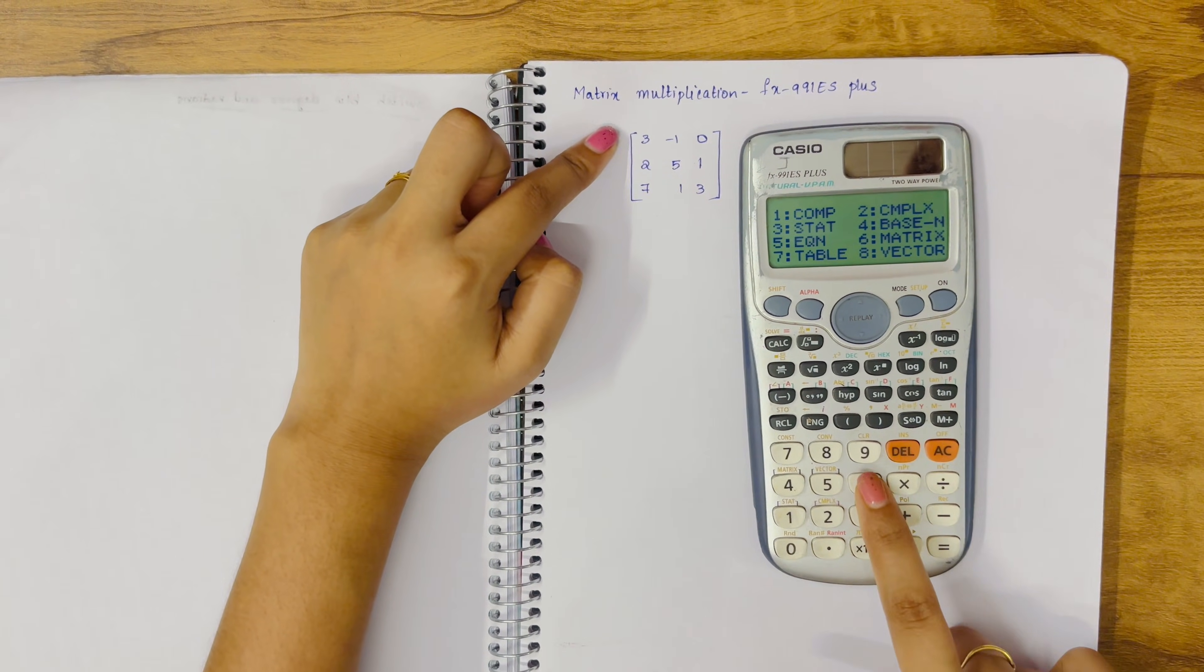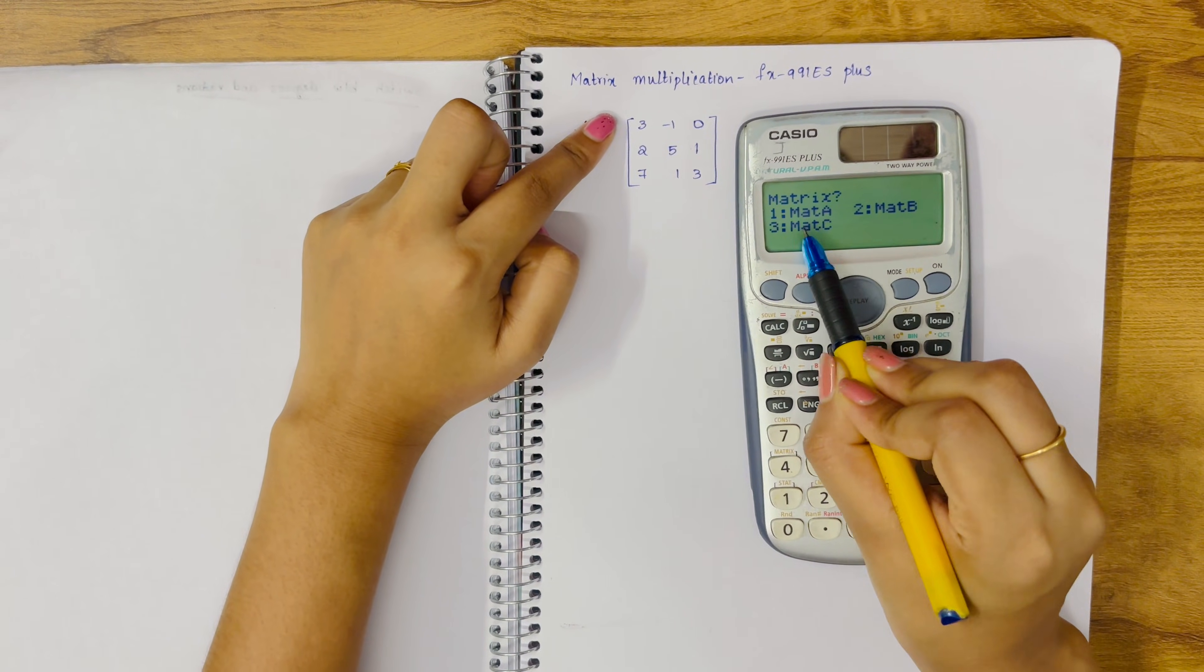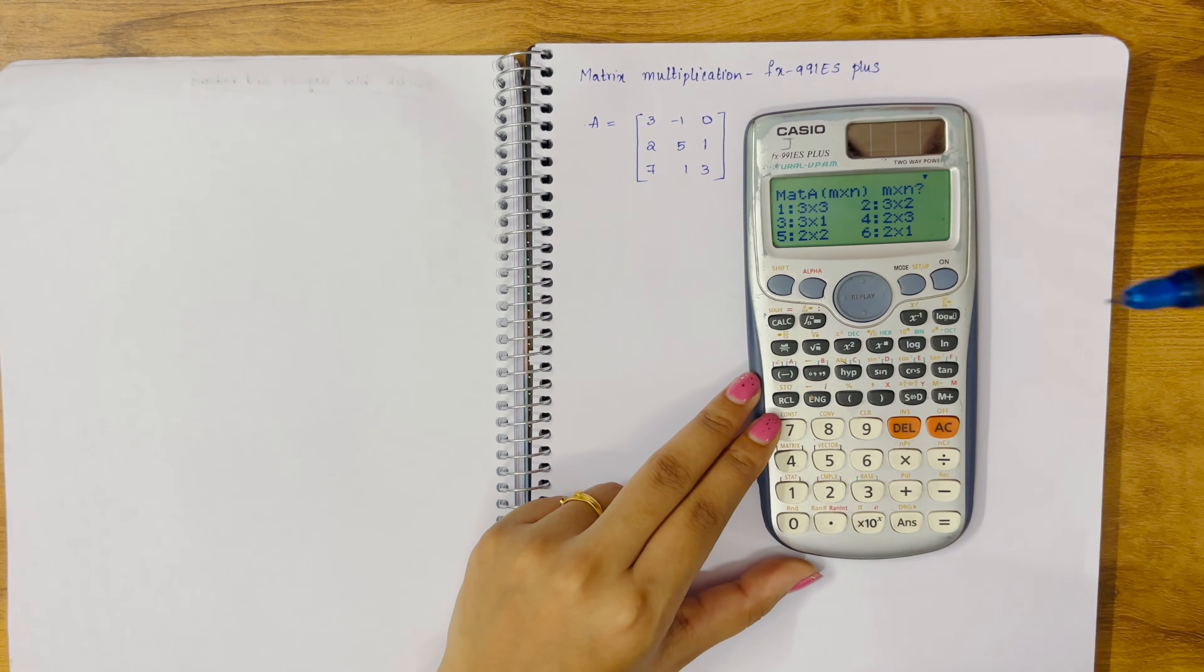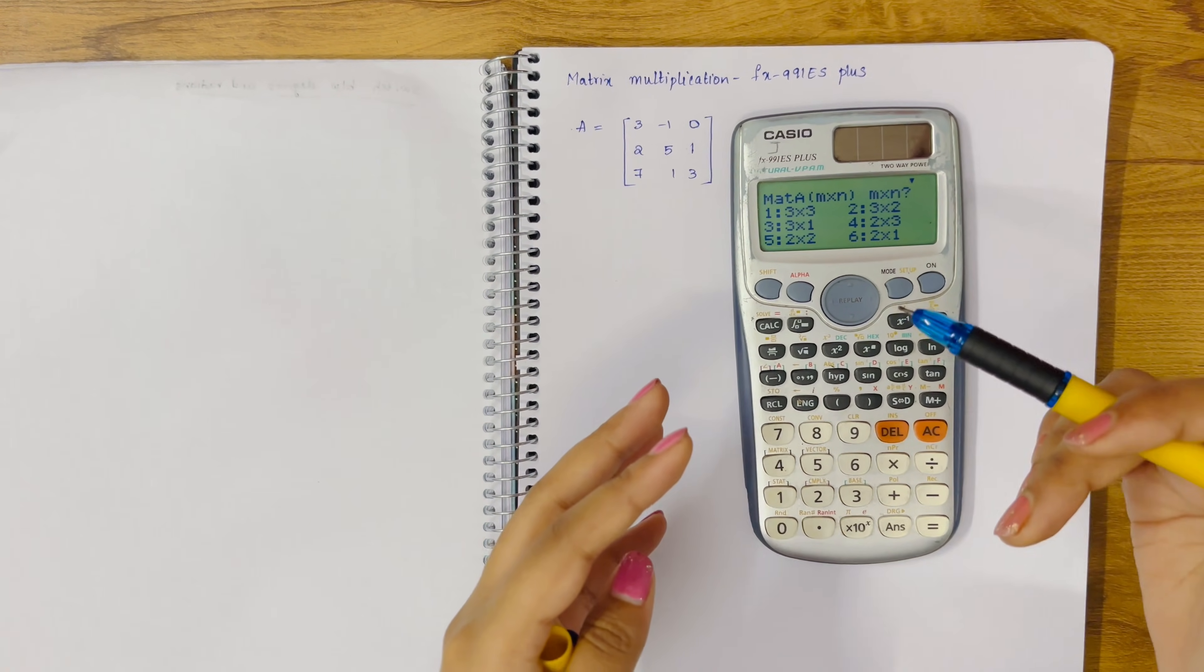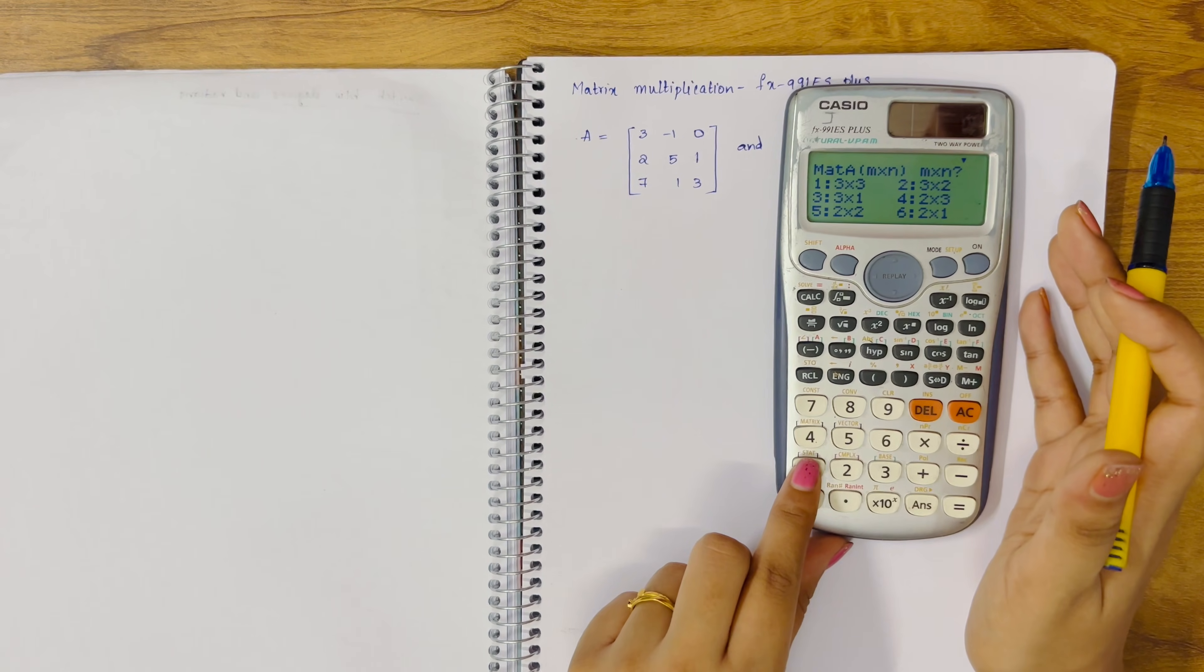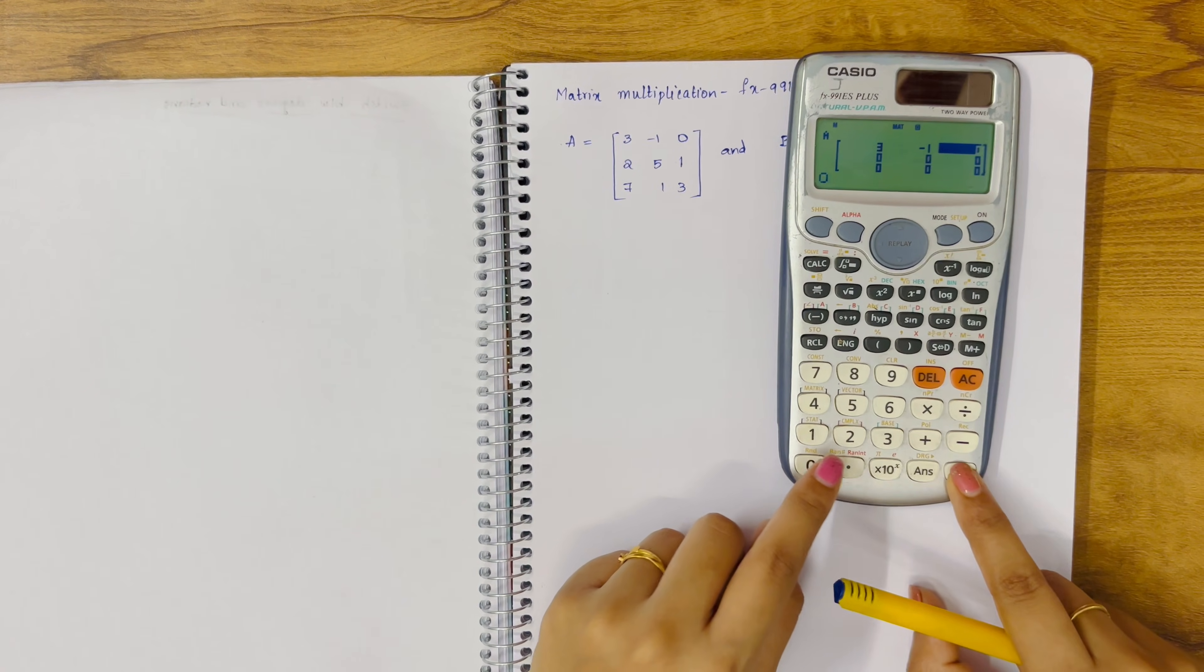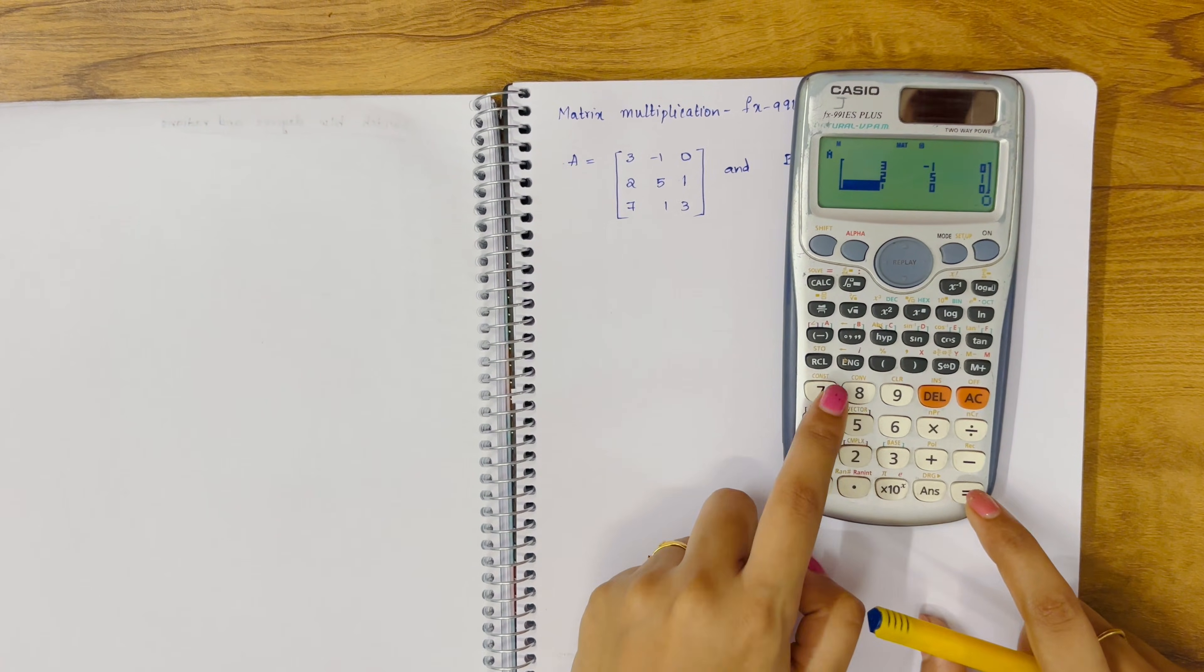First we have to define two matrices. Mat A, click on one. It is a 3x3 matrix, so depending on what matrix you are taking, select accordingly. I'm taking a 3x3 matrix. Input the values: 3 equals -1 equals 0 equals 2, 5, 1, 7, 1, 3. Done.